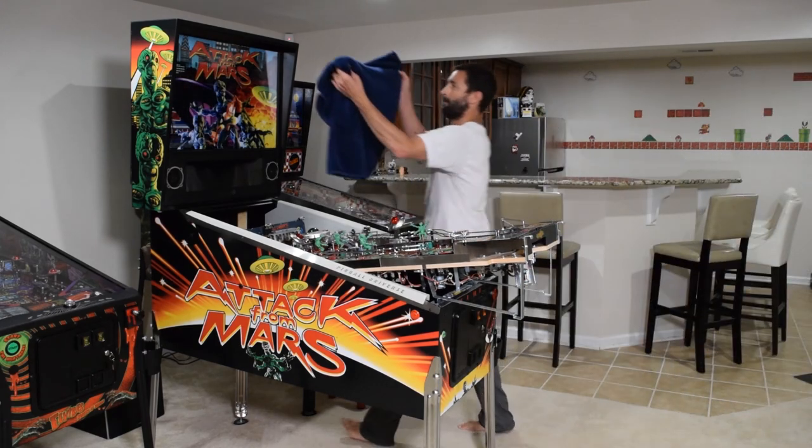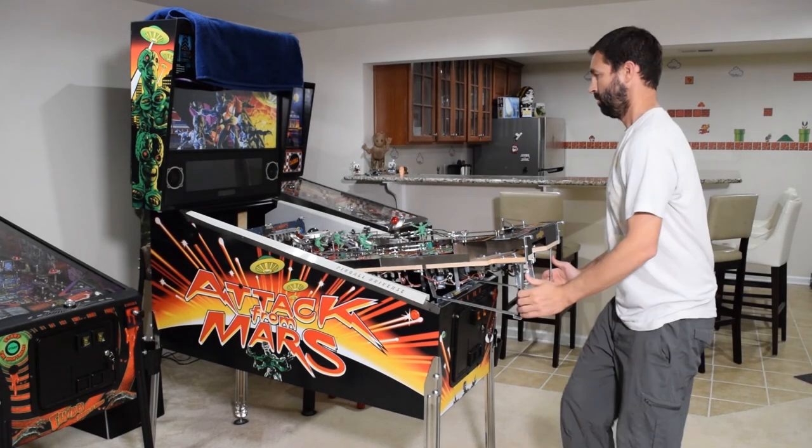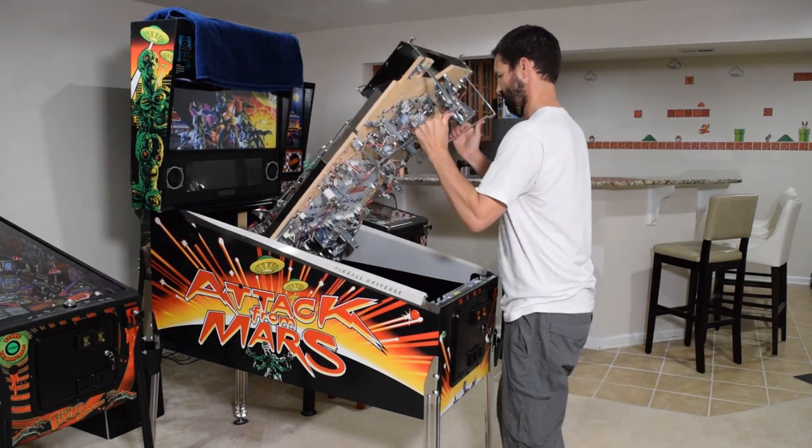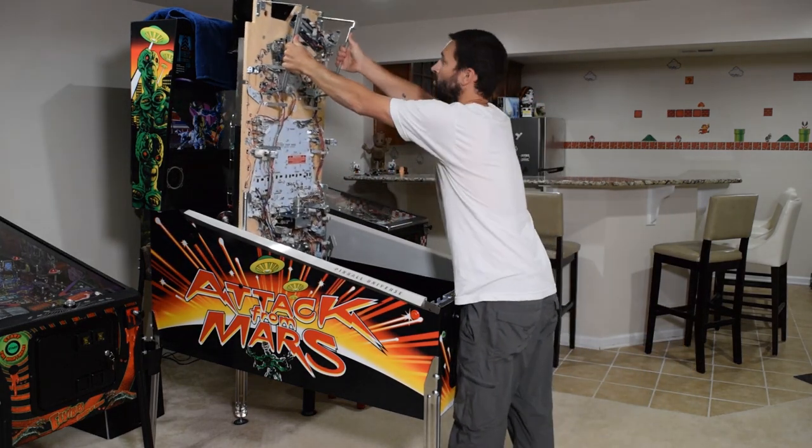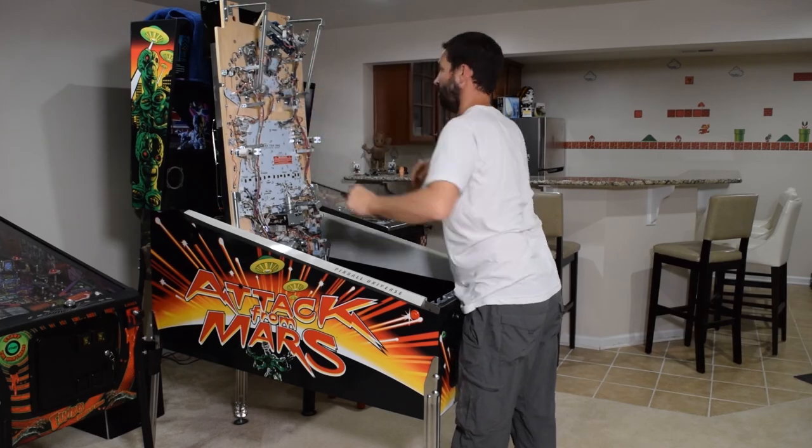Before raising the playfield, it is a good idea to place a towel or cloth on the back box to avoid scratching the back box or the apron. Now completely raise the playfield.